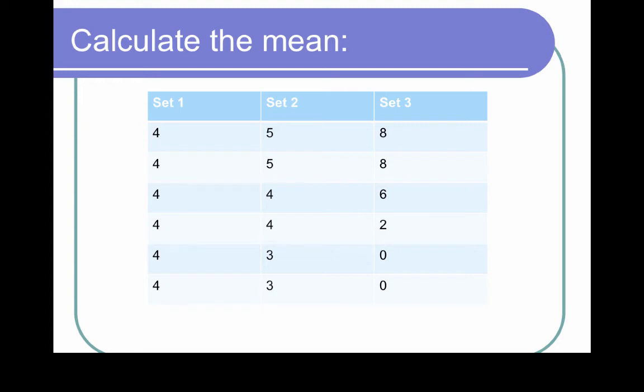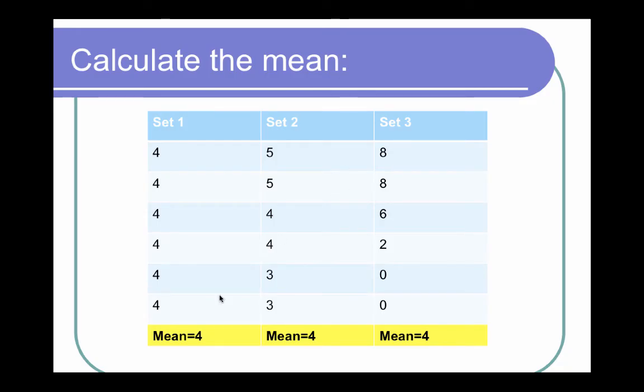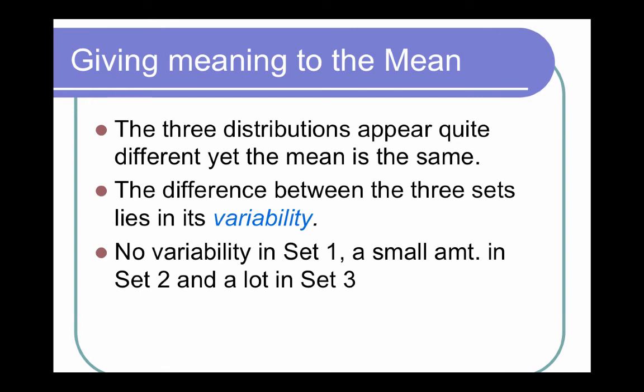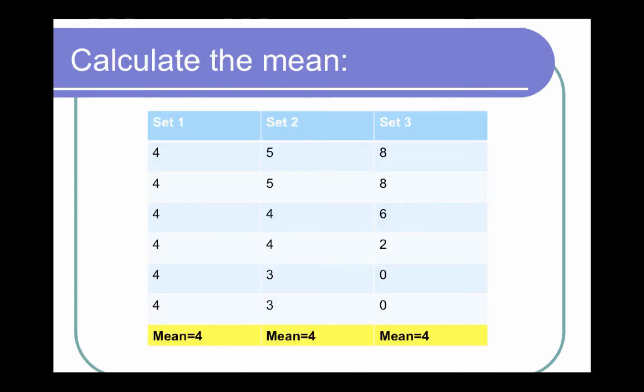You ready? Here are the answers. The mean for each of the three data sets equals four. If you added each column up and divided by the number of values, which was six in each column, then you should have gotten four for each one of them. The difference is that the distributions appear quite different, although the mean is the same. And so the difference is in the variability. In set number one, there was no variability. In two, there was a small amount. And then in three, there was quite a bit of variance in those numbers.